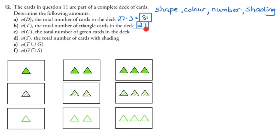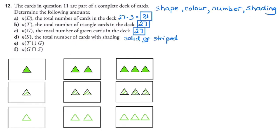If we have 27 triangle cards, we'll also have 27 square cards and 27 circle cards. With three different shapes, that gives 81 cards in total. A third of those will be green — 81 divided by 3 is 27 green cards — and likewise 27 red and 27 blue. For the number of shaded cards — solid or striped — a third of the deck is solid (27 cards) and a third is striped (27 cards), giving 54 shaded cards in total.